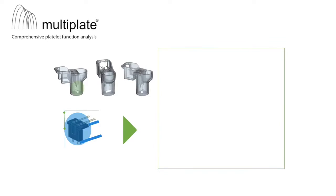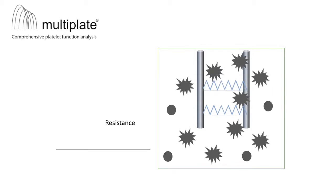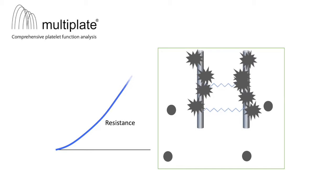Activated platelets adhere to and aggregate on the sensor wires. This leads to an increased resistance between the sensor wires, which is continuously recorded.